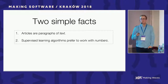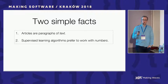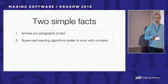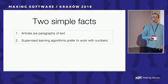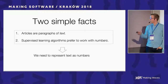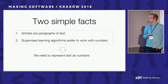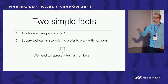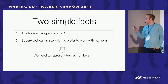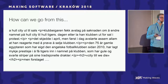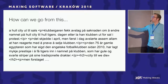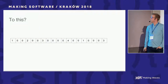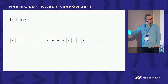Categorizing is basically the same as classification, and classification is something that can be done with supervised learning, a machine learning technique. Here are two simple facts: first, articles are mostly paragraphs of text; second, supervised learning algorithms prefer to work with numbers. Which means we need to represent our text as numbers in order to utilize supervised machine learning algorithms on them. So the question is: how can we go from this — an article about a football club — to this, a mathematical representation of the same article?